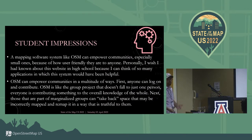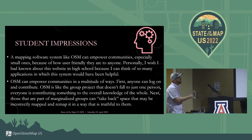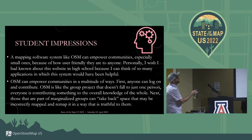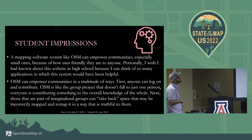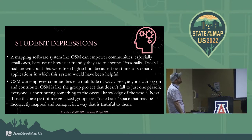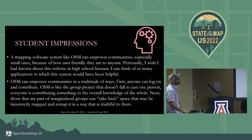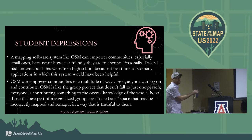Student impressions have been pretty positive. This material was from the Mapping USA conference — I couldn't get new stuff because Wednesday's lab is actually when they'll be introduced to OpenStreetMap when I fly back to Maryland. One student said a mapping software like OSM can empower communities, especially small ones, because of how user-friendly it is to anyone, and they wished they'd known about it in high school. Another noted that OSM can empower communities in a multitude of ways: first, anyone can log on and contribute — it's like the group project that doesn't fall to just one person. And those from marginalized groups can take back space that may be incorrectly mapped and remap it in a way that's truthful to them.